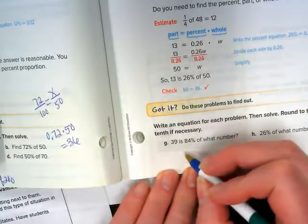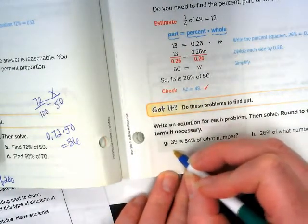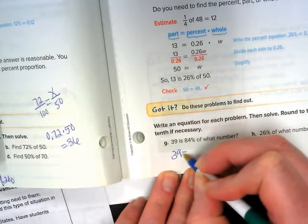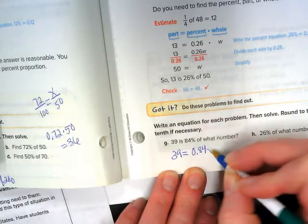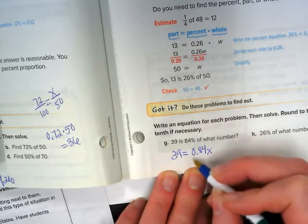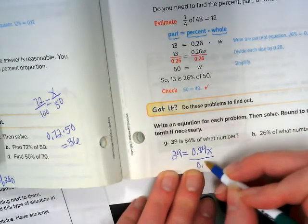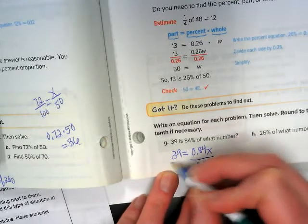So, an example here, 39 is 0.84% of what number? I would divide by 0.84 because I want to get that x by itself.